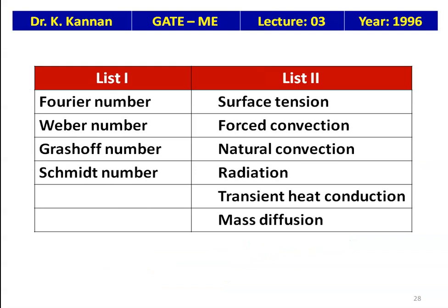Match the following dimensionless numbers with their associated phenomena: Fourier number — transient heat conduction; Weber number — surface tension (fluid mechanics); Grashoff number — natural convection; Schmidt number — mass diffusion. This is the correct matching.